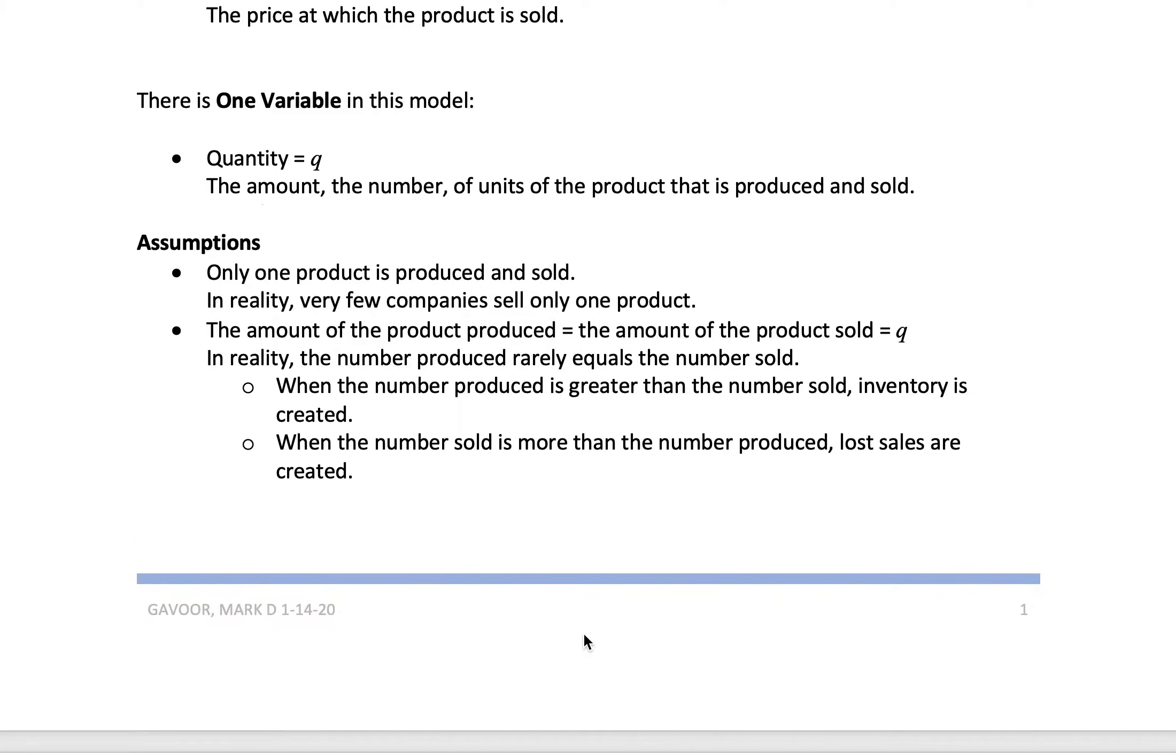There's only one variable in the model, Q, the quantity of product that you sell. I've put here as the quantity of products that you've produced and sold. The assumption is that only one product is produced and sold. In reality, very few companies sell only one product.